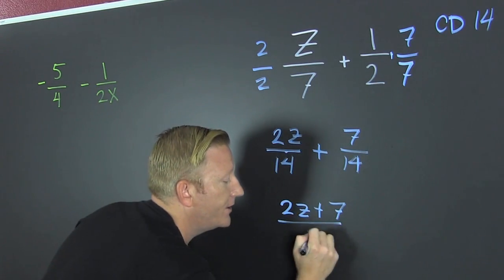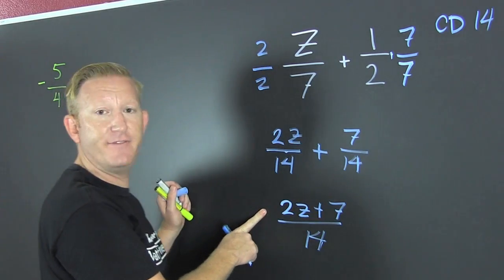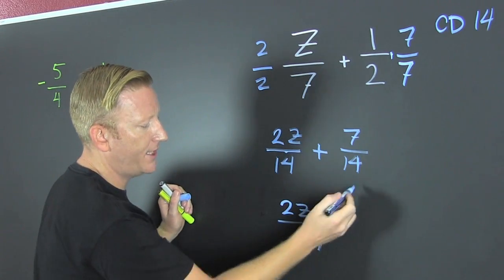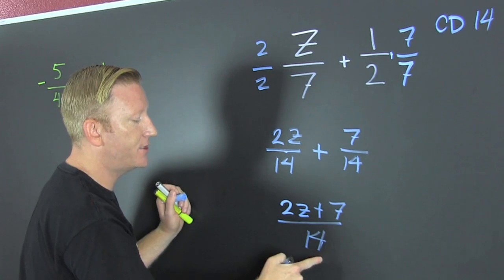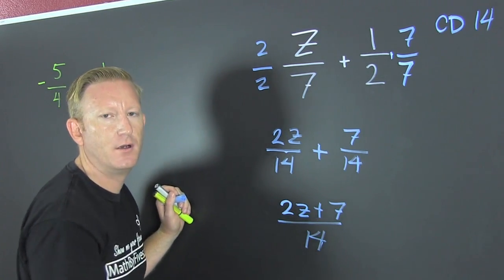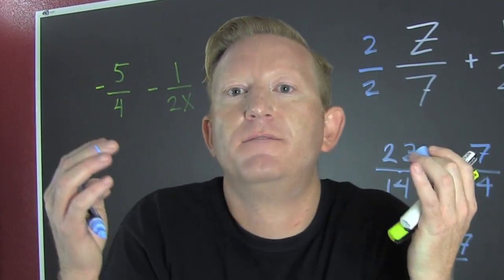So then, that's all over 14. And then, I can't factor anything out of there. Can I just do this, boom, make that a 2, and then boom, boom. Oh, my God. No!